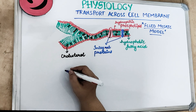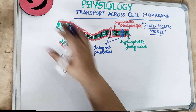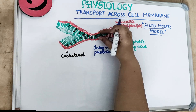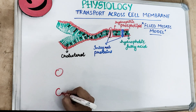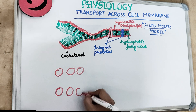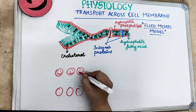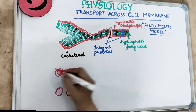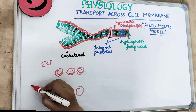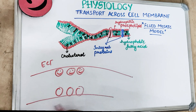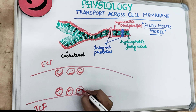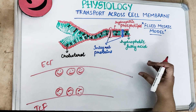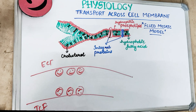The cell membrane structure consists of a phospholipid bilayer - two layers of phospholipid. We have a phospholipid head. Imagine this is the extracellular fluid, this is the cell membrane, and this is the intracellular fluid within the cell. The phospholipids are on the peripheries; that is why we call this model the phospholipid bilayer.